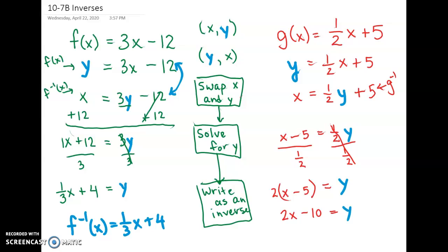And then our last step is we're going to write that as an inverse. So our inverse function is g inverse of x equals 2x minus 10.